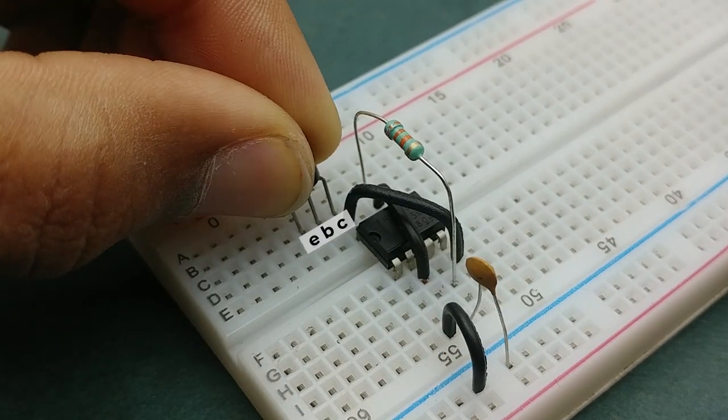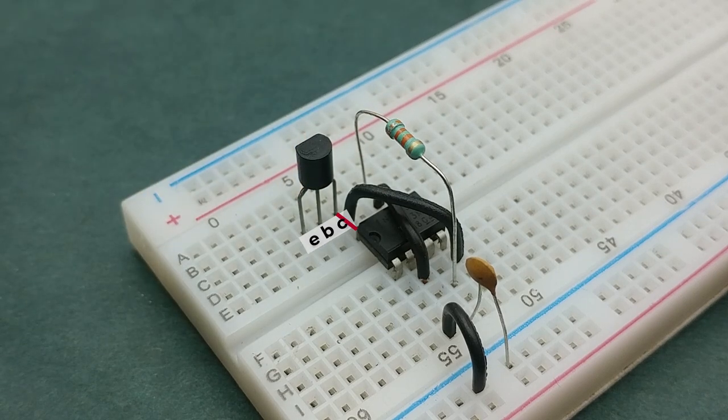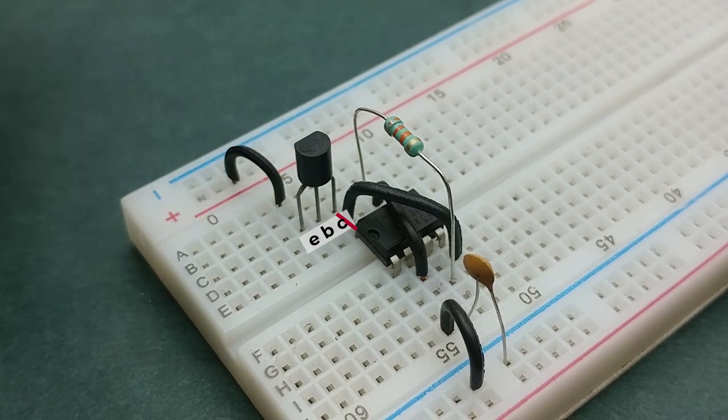Now place any PNP transistor such that the collector pin is connected to pin 8 of the triple fire timer IC. Then connect the emitter pin to the positive rail via a conducting wire.